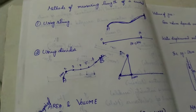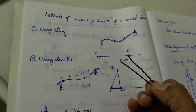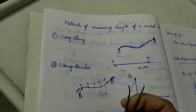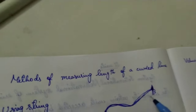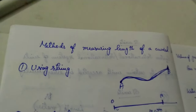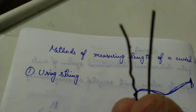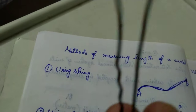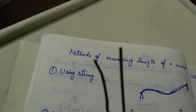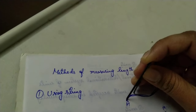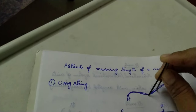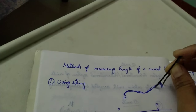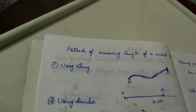The next method is the divider method. Since I don't have a divider, I will use this pen. The divider has two legs. Keep the divider at a distance of one centimeter using a scale — that is, the distance between the two legs should be one centimeter. Place it on the curved line, mark the first one centimeter, then from the second point to the next one centimeter, third, fourth one centimeter. If there is any remaining length that cannot be marked, take a scale and measure that length. Finally, you will get the length of the curved line using the divider.